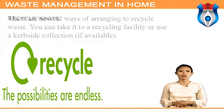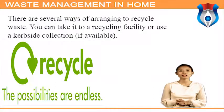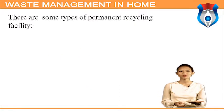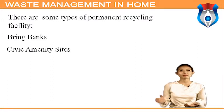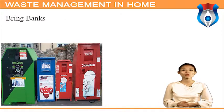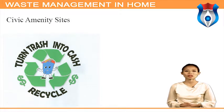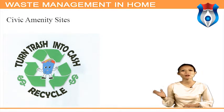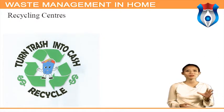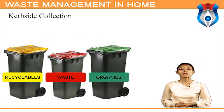There are several ways of arranging to recycle waste. You can take it to a recycling facility or use a curbside collection if available. Types of permanent recycling facilities include bring banks — with almost two thousand throughout the country — civic amenity sites, which are similar to bring banks but accept a larger variety of items, and recycling centers, which are staffed and gated with specific opening hours but accept a smaller variety of items than civic amenity sites.